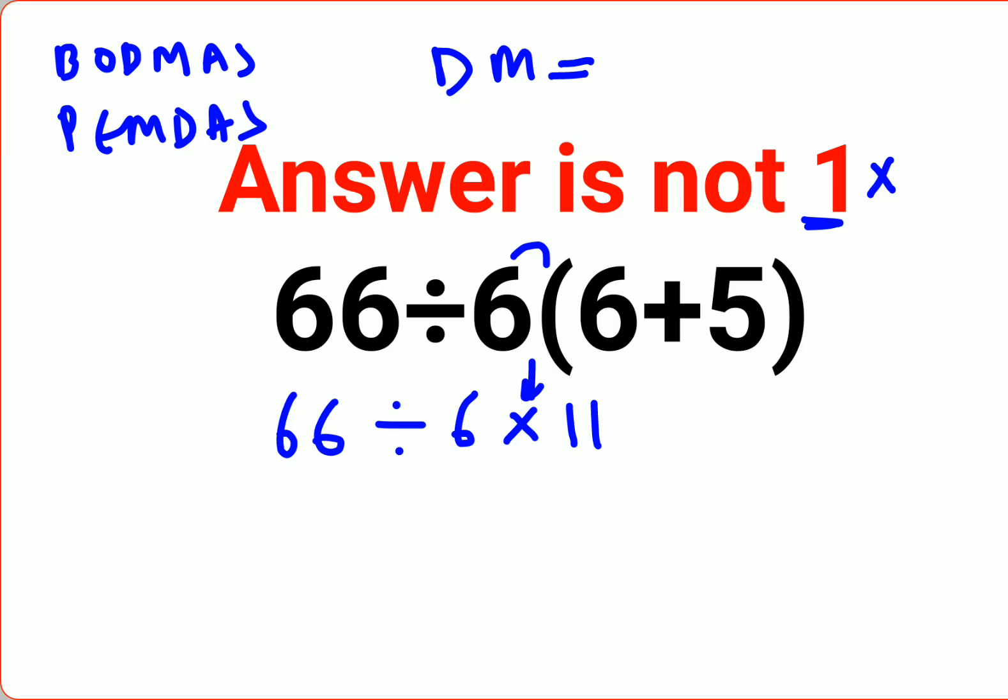So when you have cases like this, you need to remember you need to go from left to right. Whatever operation comes first on your left hand side has to be done first. So first we will do 66 divided by 6 which gets you 11 into 11. Answer comes out to be 121.